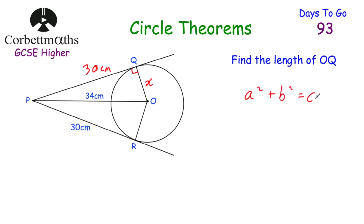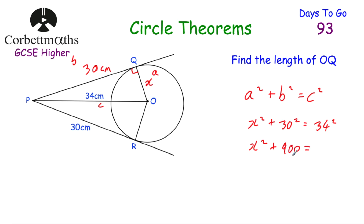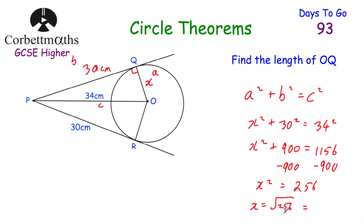Using Pythagoras: a² + b² = c², where C is the hypotenuse. So x² + 30² = 34², giving x² + 900 = 1156. Subtract 900 from both sides: x² = 256. Taking the square root, x equals 16. So OQ is 16 centimetres. When dealing with circle theorems, you may occasionally need Pythagoras or even trigonometry to find missing angles.